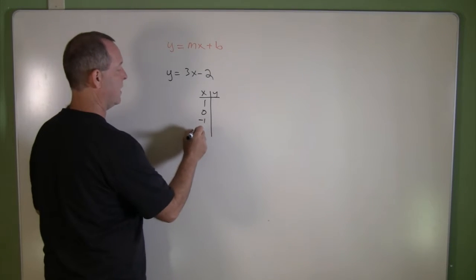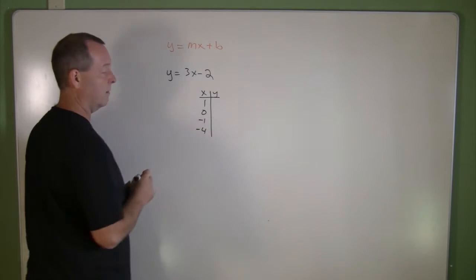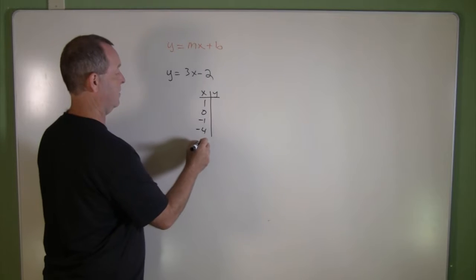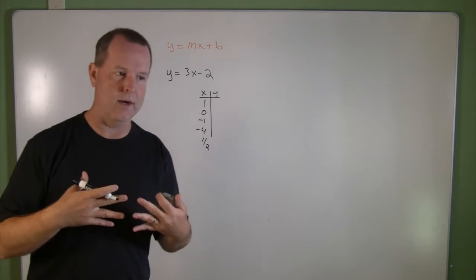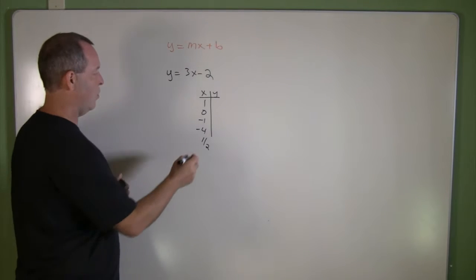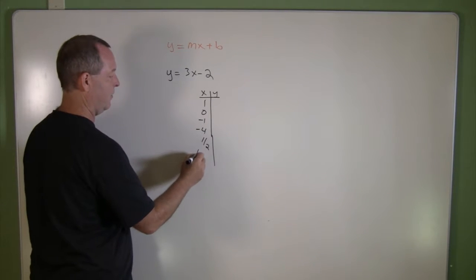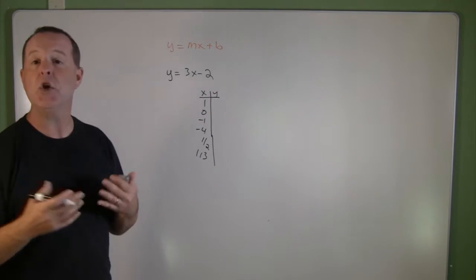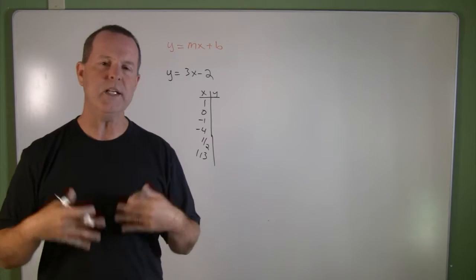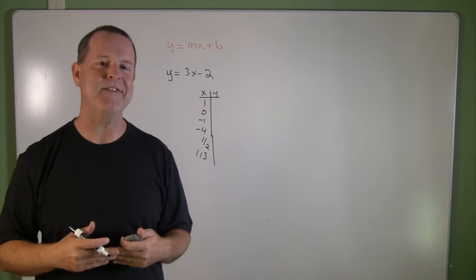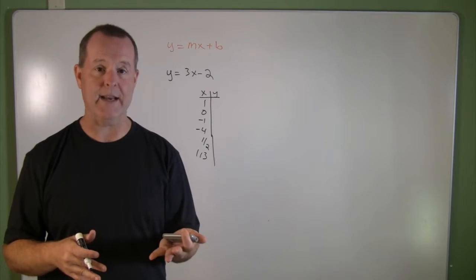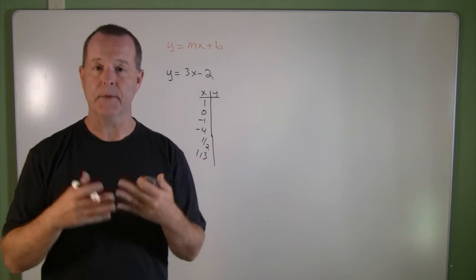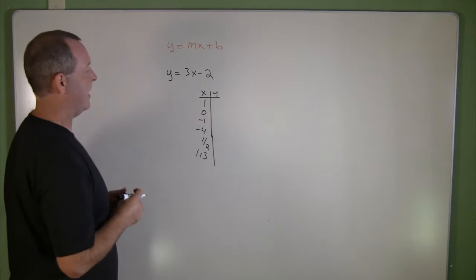So if you want to choose negative 4, you're welcome to. If you want to choose a scary number like 1 half, you can do that. I wouldn't, but you can. Again, if you want to choose a number like 113, you can do that as well. And the reason we can do that is because there's an infinite amount of solutions. But we only need three right now because those three will help us determine what the line looks like.